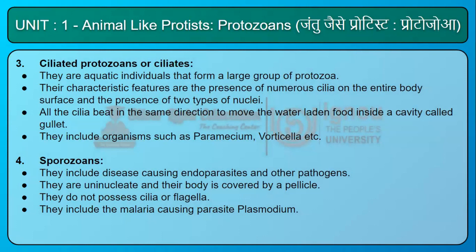Fourth, sporozoans. They include disease-causing endoparasites and other pathogens. They are uninucleate and their body is covered by a pellicle. They do not possess cilia or flagella. They include the malaria-causing parasite Plasmodium.